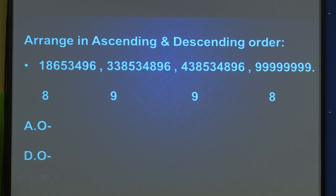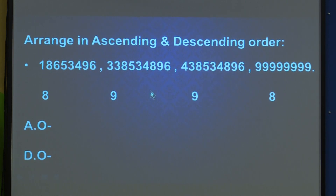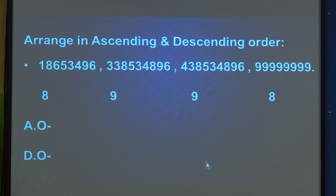For descending order it is the reverse. First we write the greater number. We write the larger 9-digit number first, then the smaller 9-digit number, then out of the 8-digit numbers we write the greater one third, and the smallest 8-digit number last. In one question we write both ascending and descending order.